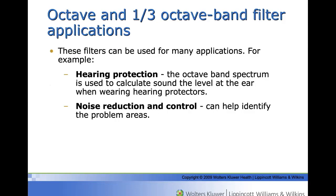These filters can be used for many applications, but in particular, they are used to identify the frequency content of the noise and to help control and reduce the noise. In hearing protection, the octave band spectrum is used for calculating the level at the ear when wearing hearing protectors. Some data logging meters are provided with software that makes these calculations. In noise reduction and control, these filters can help identify the problem areas and then focus noise control on those levels.